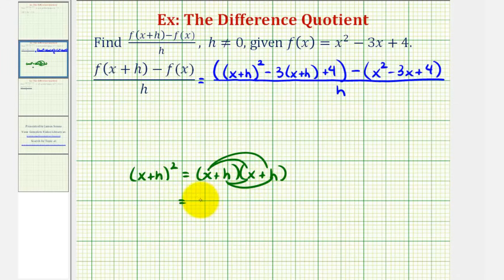So x times x is x squared, x times h is plus hx, h times x is another plus hx, and then finally plus h squared. So we'll have x squared plus, we have one hx plus one hx, that's two hx, plus h squared.